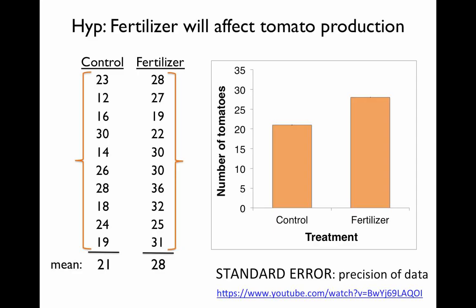If we calculate standard error for each of our treatments, we get 2.02 and 1.66. We can add this information to our graph to give the reader an idea of how much variation we have within our treatments. To do this, we add a vertical bar to the top of our control bar — the standard error was 2.02, so we add a vertical bar with a height of 2.02 units, with a cap on top to define where that line ends.